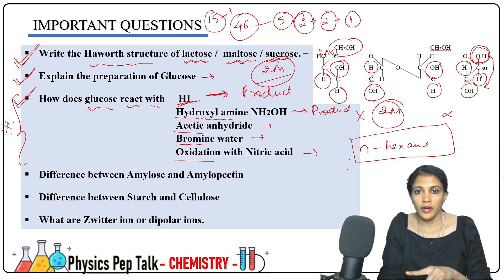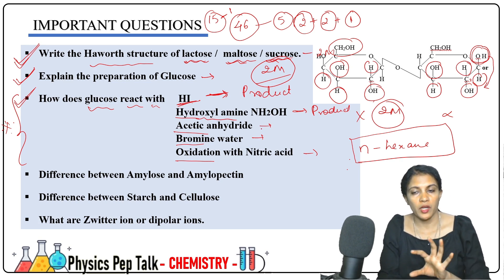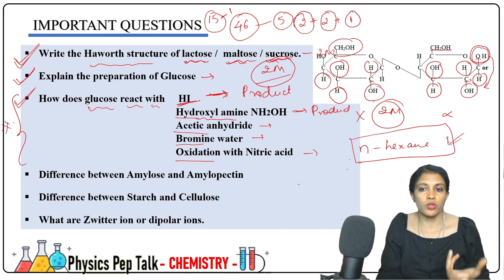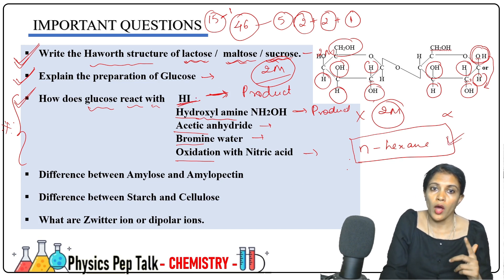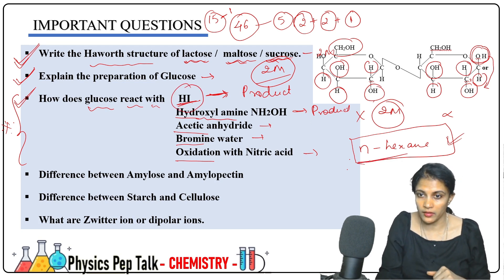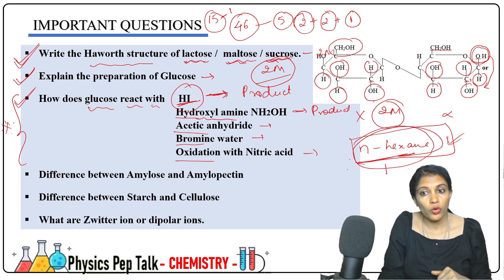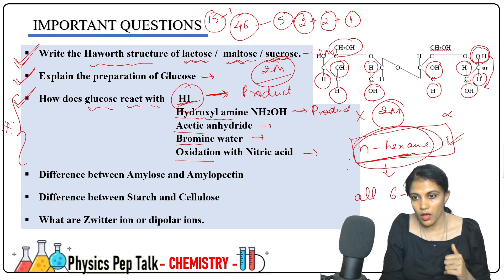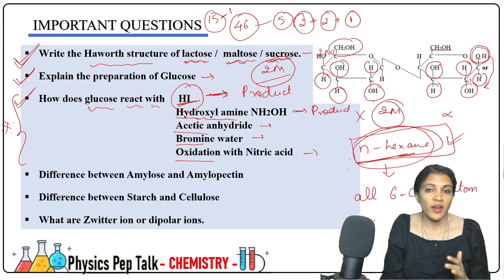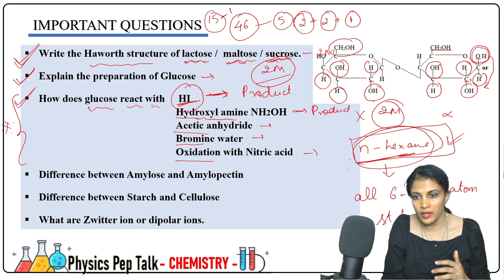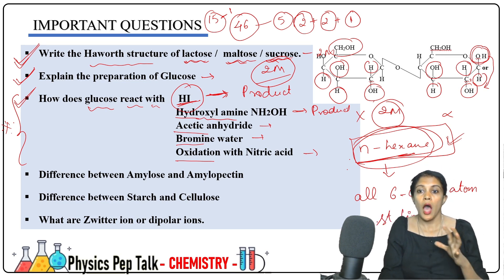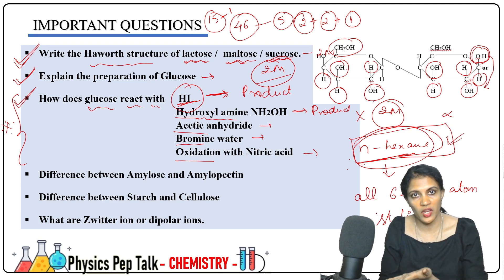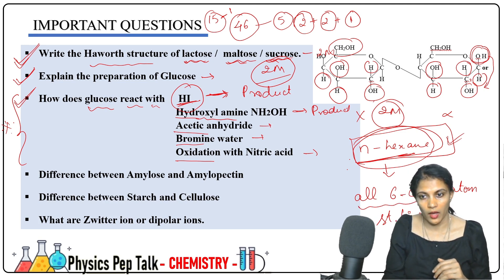Glucose reacts with hydrogen iodide — this proves that all six carbon atoms are present in a straight chain. All six carbon atoms are in a straight line — that is the key point of this question.